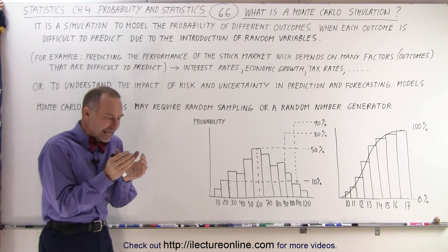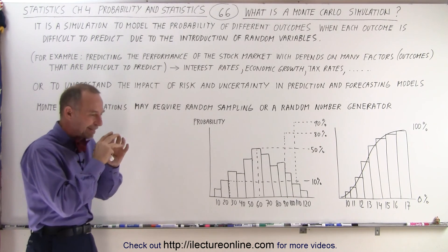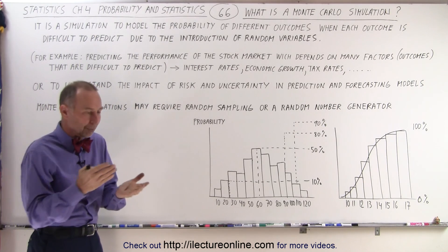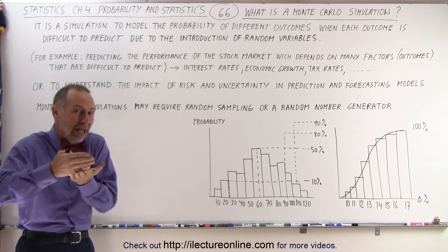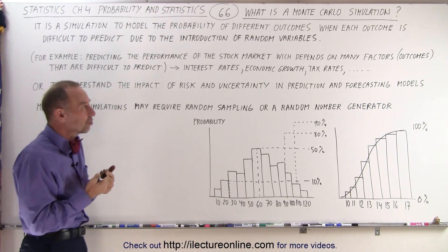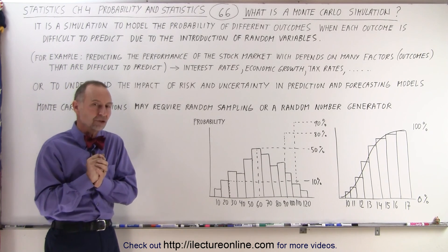In other words, if an outcome or if we're trying to predict something or try to find a probability of a particular overall outcome which depends on individual outcomes which are hard to predict or hard to figure out what may happen in the future, then we use what we call a Monte Carlo simulation.